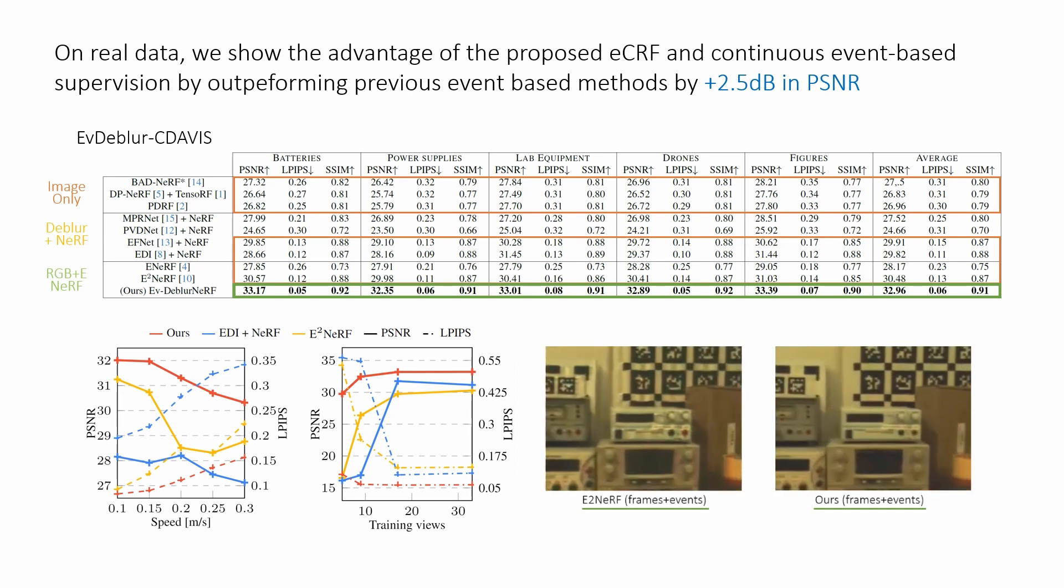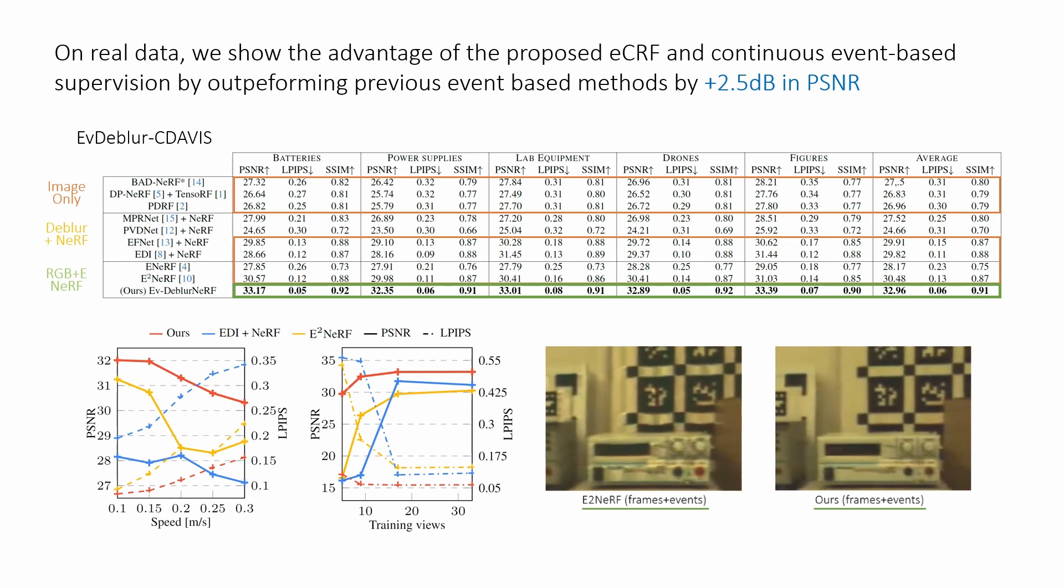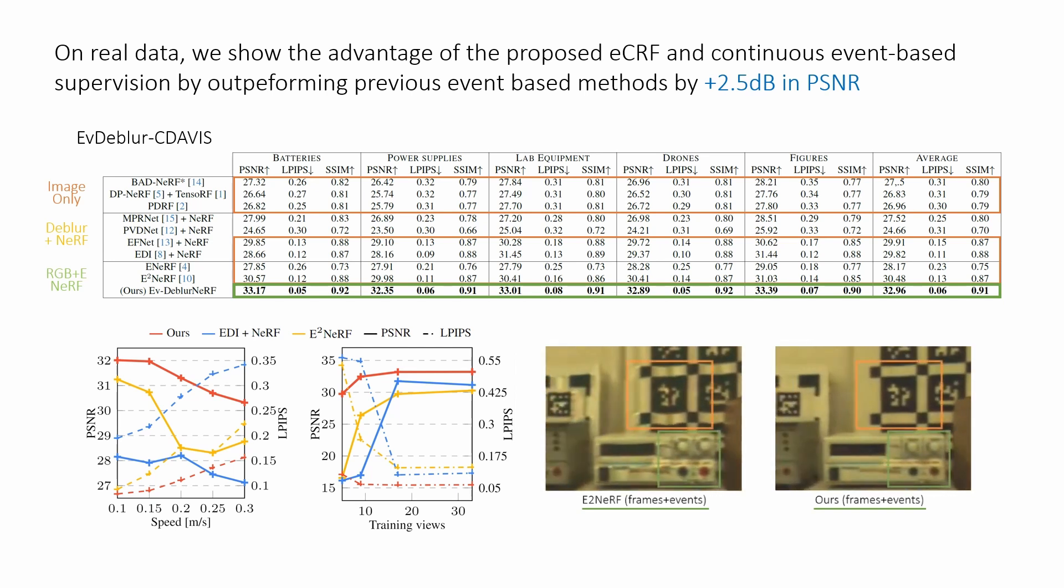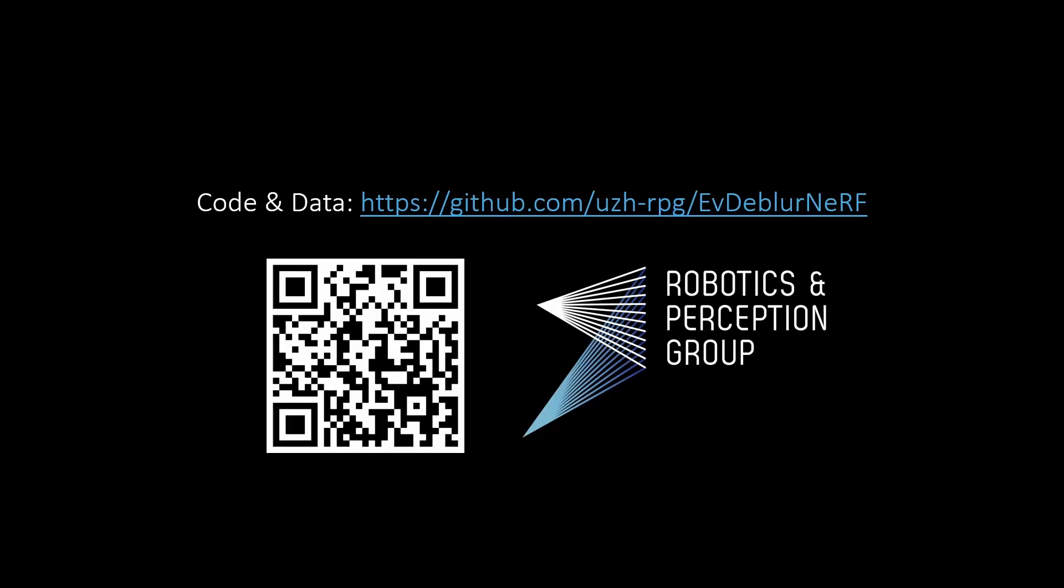Our method can achieve around 30 dB of PSNR when just 5 images are used for training. Please visit our GitHub page to access code, data, and additional materials.